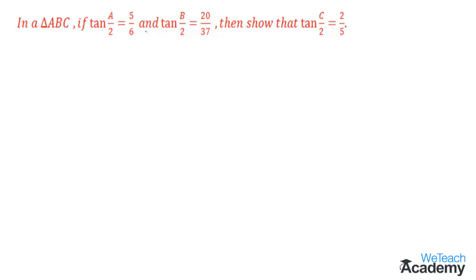Given that the value of tan(A/2) is 5/6 — let us name this as equation 1. And tan(B/2) is equal to 20/37 — let us name this as equation 2.